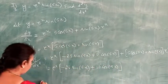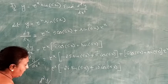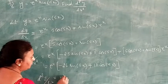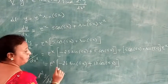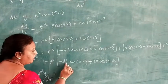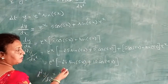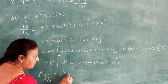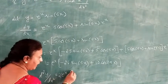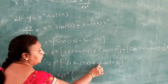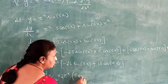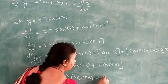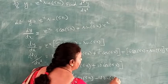Therefore d²y/dx² equals 2 e to the power x into 5 cos 5x minus 12 sin 5x. Taking 2 as common factor from 10 and minus 24 gives the final answer.